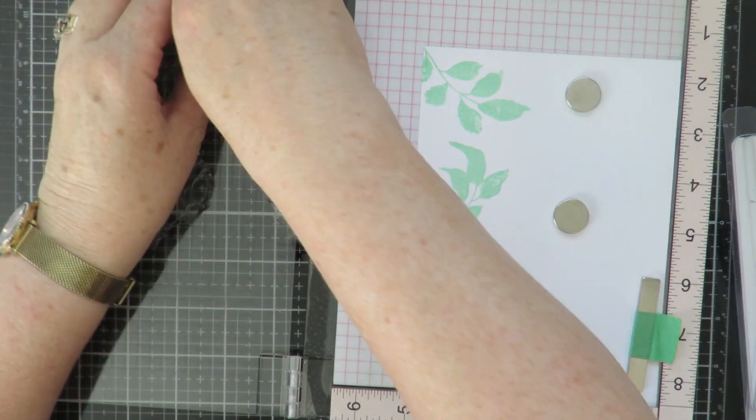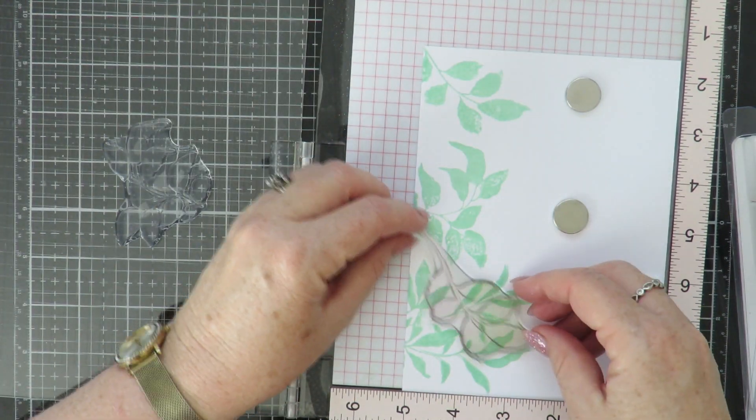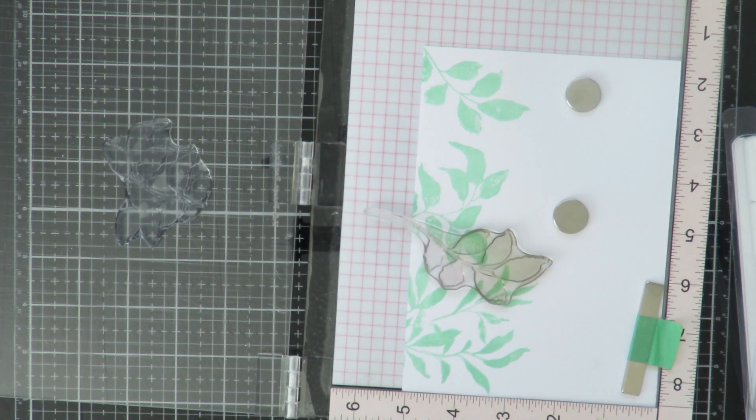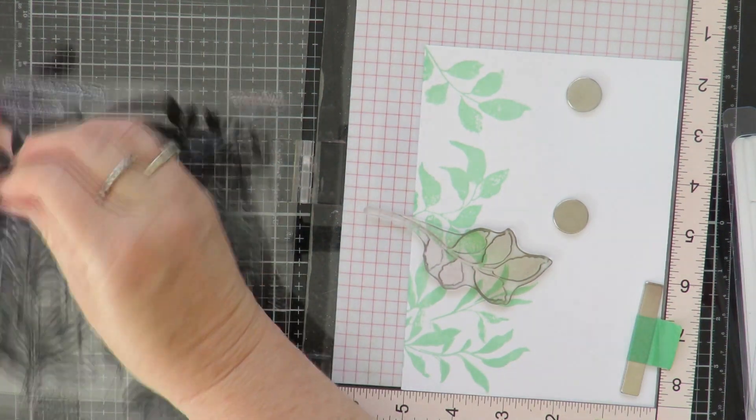I'm now going to select a couple of stamps and I'm going to do a second layer with a slightly darker color, and I'll put the rest of the stamps away that I'm not going to use for this.